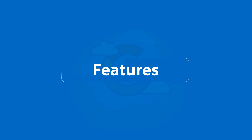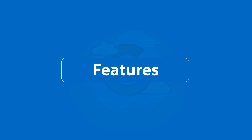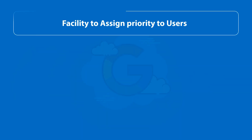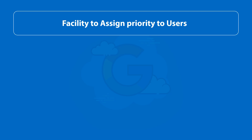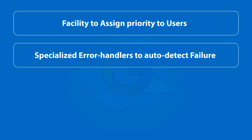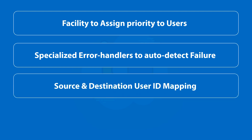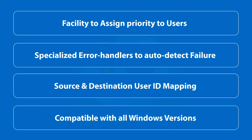Now let's check out the main features of the software. The tool provides an option to assign priority to users while performing G Suite migration. The software includes specialized error handlers which auto-detect internet connection loss and resume migration successfully. Multiple options to perform source and destination user ID mapping are provided, and the software is compatible with all Microsoft Windows versions.